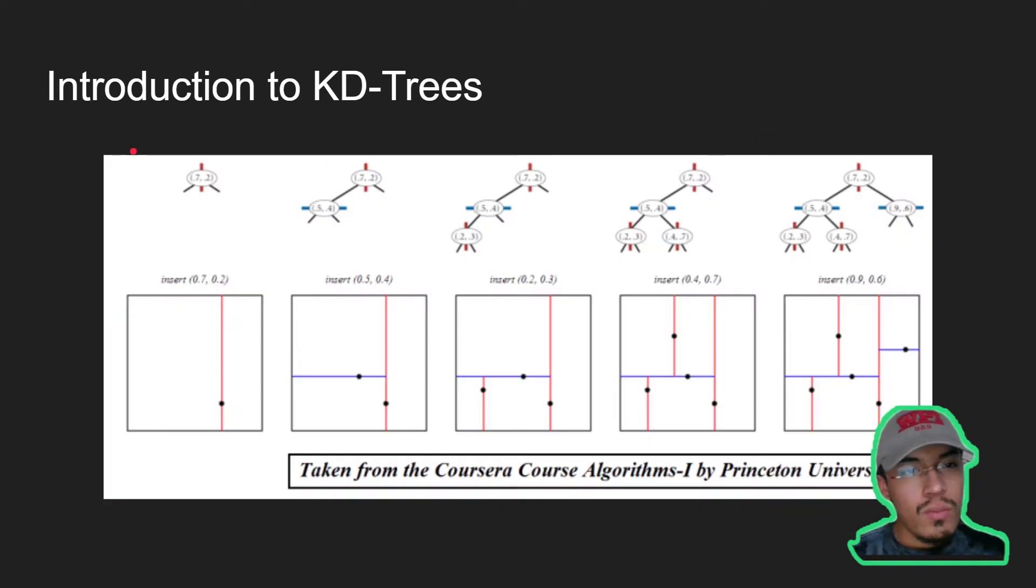Here is an example of two-dimensional points added to a two-dimensional tree. The first point is inserted as the root of the tree with the vertical orientation division showing in red. The next point is less than the root as it is added to the left subtree with a horizontal subdivision. This process is repeated until all the points are added to the KD-tree.